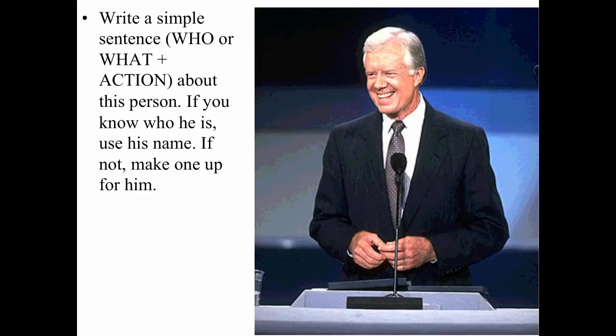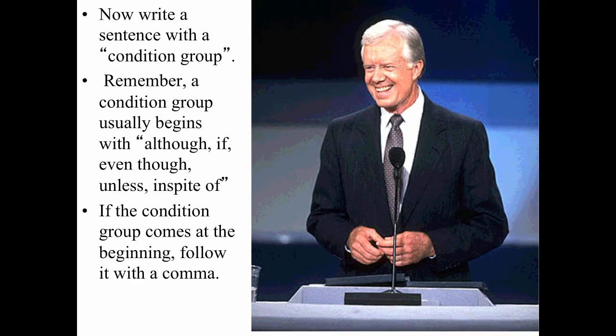Now let's try it again with a new person. Look at the picture of this person and write a simple sentence about him. If you don't know his name, make one up. The who or the what comes at the beginning, followed by an action — just a simple sentence. Once you have that, we're going to make it more interesting by adding a condition group to the beginning. Remember, the condition group begins with one of the following words: although, if, even though, unless, or in spite of. The condition group comes at the beginning and is followed by a comma.